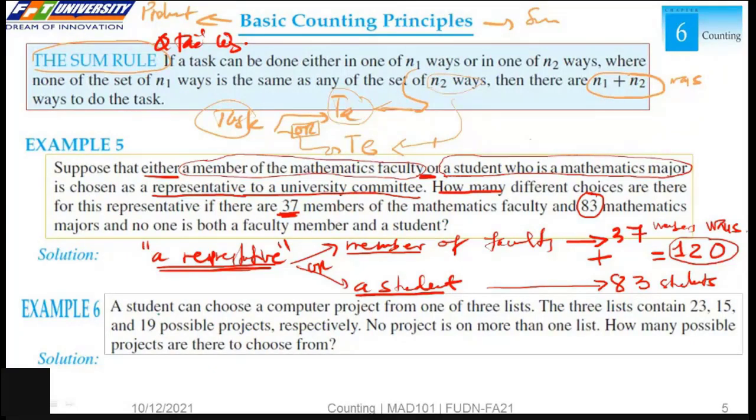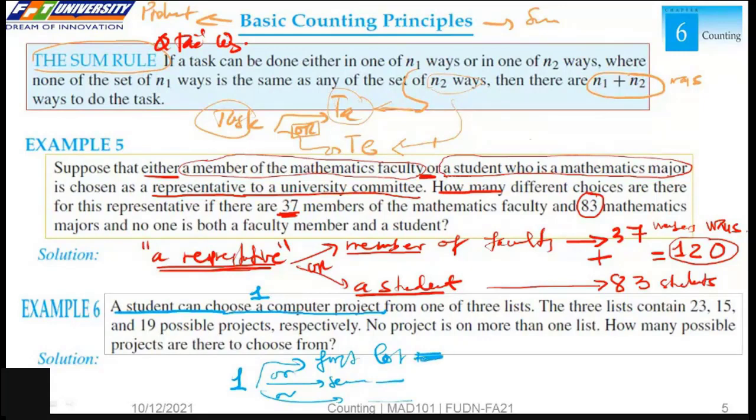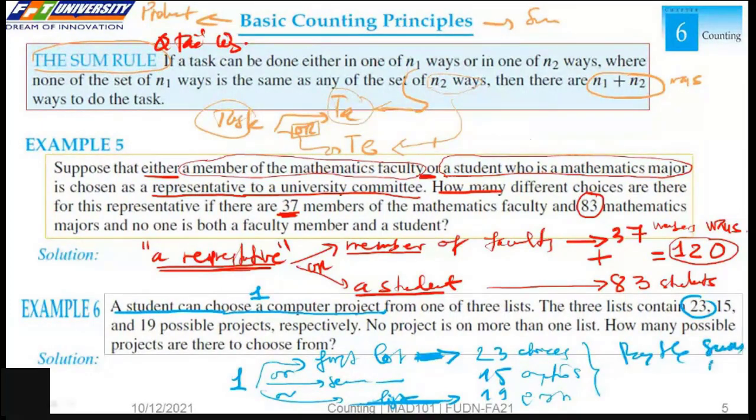We choose one project. We can choose from the first list or the second list or the third list. If we want to choose from the first list, we have 23 choices. By the sum rule, we have...